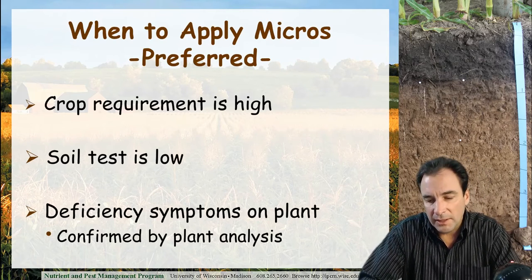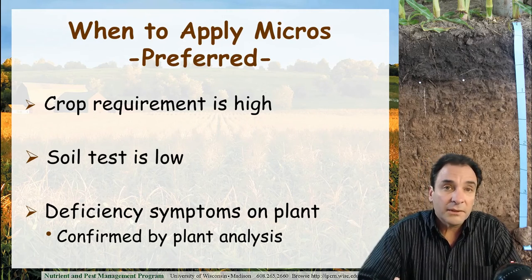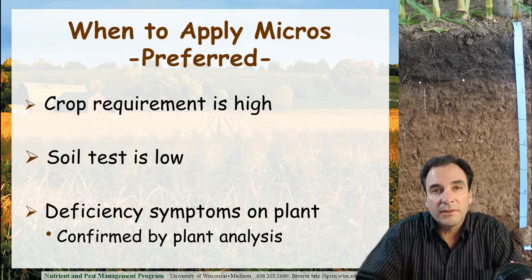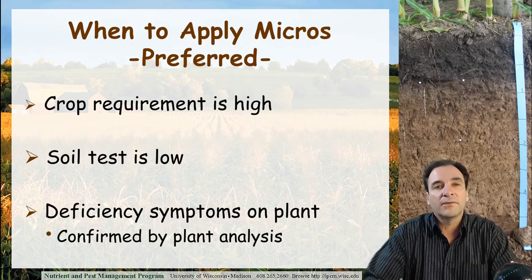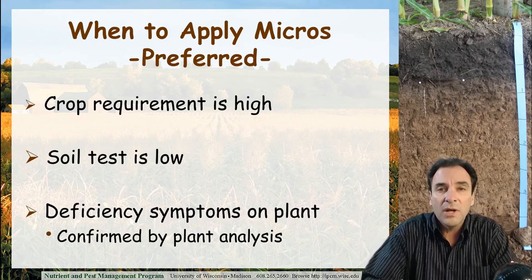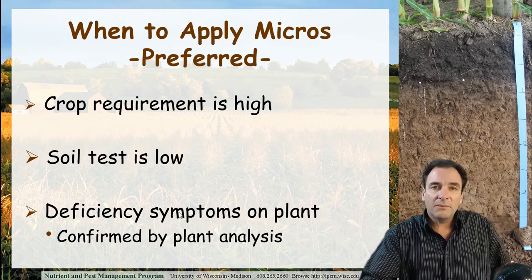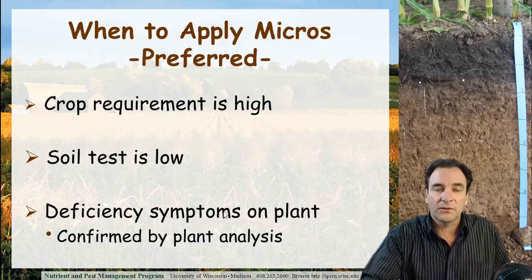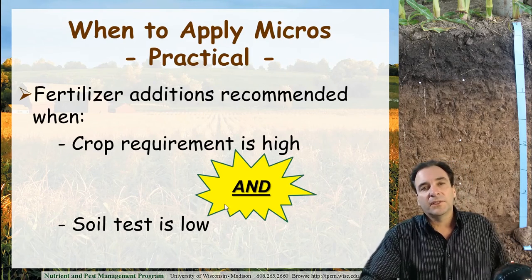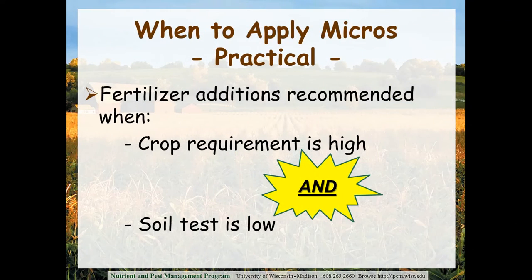When to apply micronutrients? There's a preferred and a practical technique for assessing the need. One of the main criteria is: does the crop have a high requirement for a given micronutrient — for example, corn with zinc, boron and alfalfa? Then we look at our soil test levels — if there is a soil test for the micronutrient in question, is it low? We can confirm the issue by observing deficiency symptoms on the plant, which we confirm with plant analysis. However, this last step typically occurs too late in the growing season to correct the problem. So the practical technique is to know the crop nutrient requirement is high, and if the soil test for that is low, be prepared to apply some supplemental micronutrients.